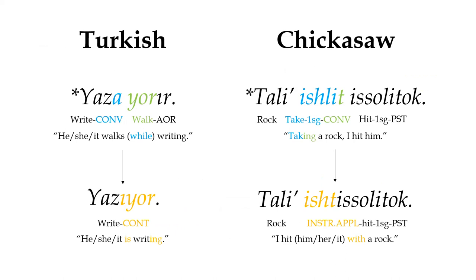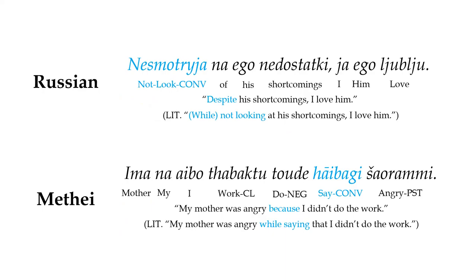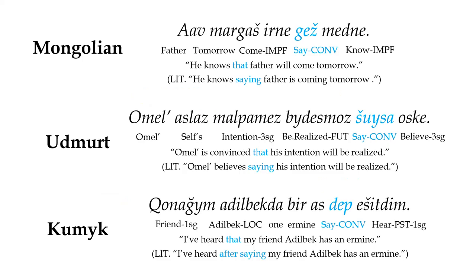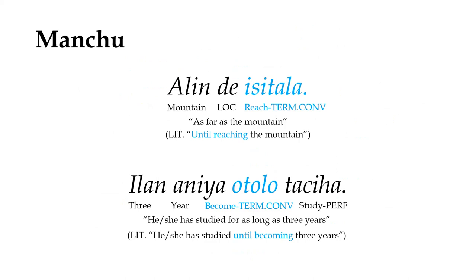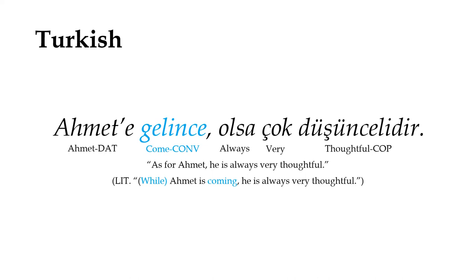Further evolution may result in the auxiliary fusing with the converbs to become new verb morphology. Converbs may also evolve into new adpositions, conjunctions, or discourse markers. A cross-linguistically common development is for the verb to say in converb form to evolve into a complementizer for verbs of speech and thinking. In Manchu, the two different words that roughly translate to until are derived from a combination of the terminative converb and the verb stems to reach and to become, and in Turkish, the converb form of to come can be used as a sort of topic marker.